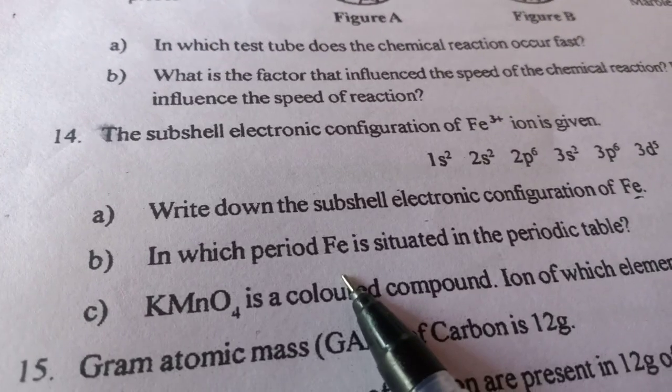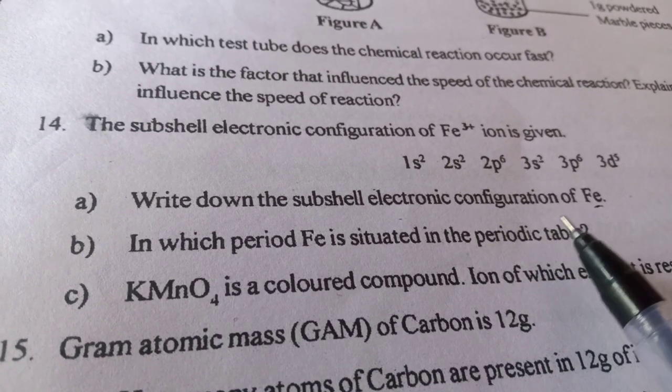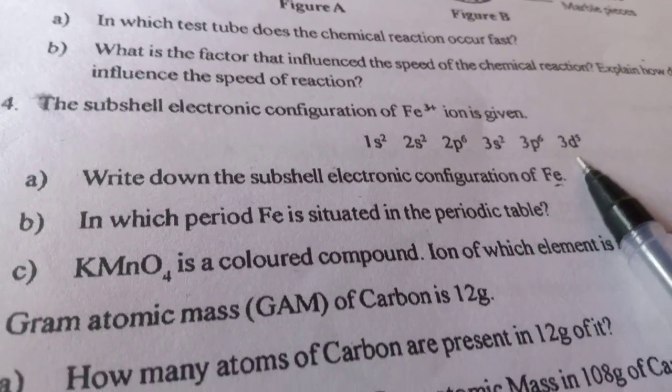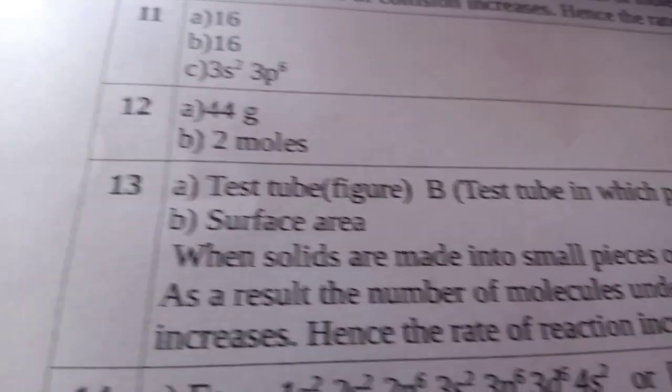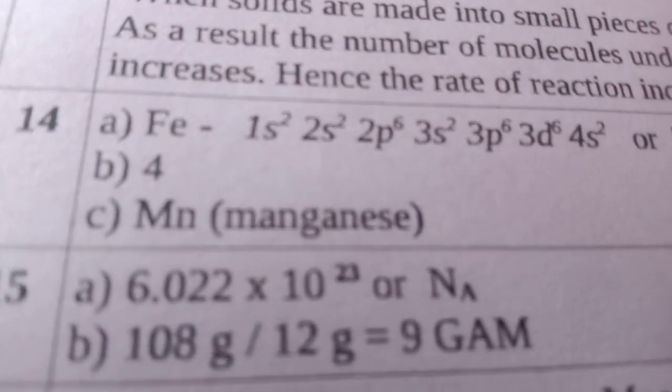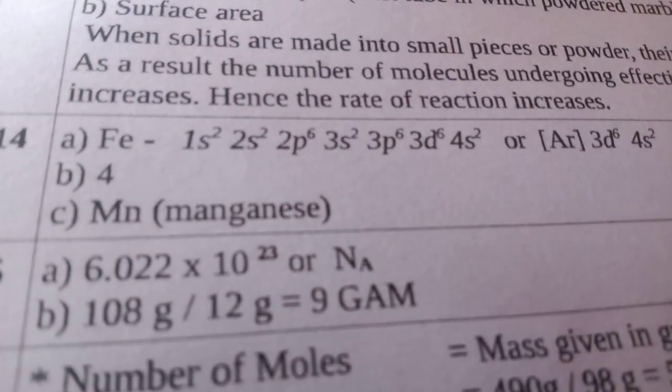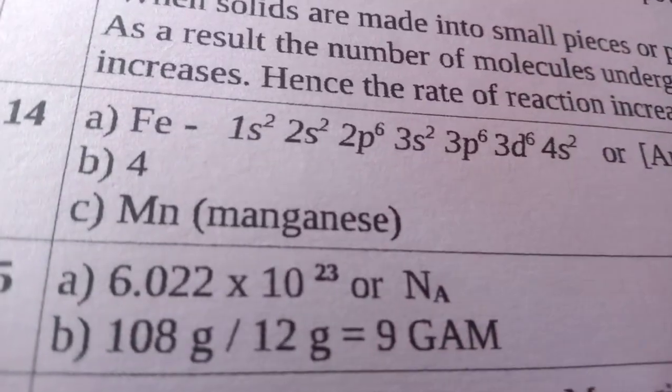This is the answer. Then Fe will have this configuration. The next one is, in which period Fe is situated in periodic table? It is 4th period, it is situated. 4th period, that is 4s2.